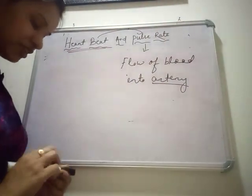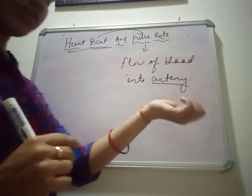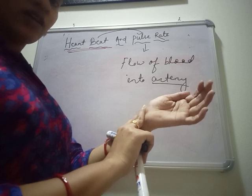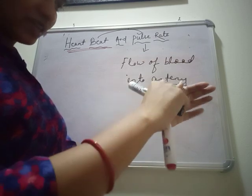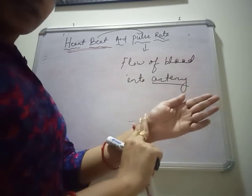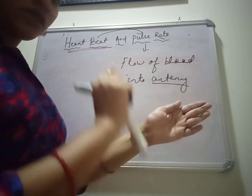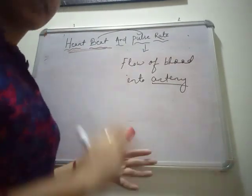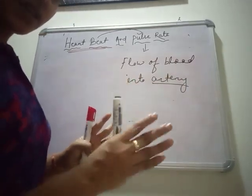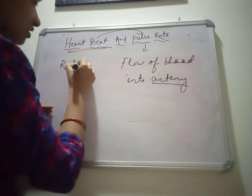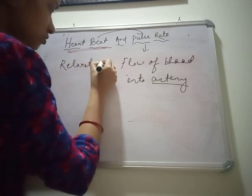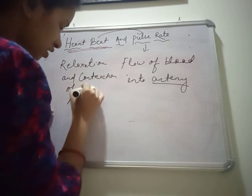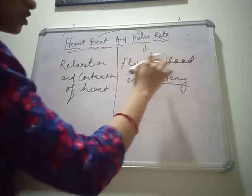You can feel your pulse rate on your left hand — turn it over and use two fingers, the index finger and middle finger. Press just below your thumb, and you can feel a throbbing — that is your pulse rate. Many people understand heartbeat and pulse rate as the same. The rate is the same, but the function is different. Heartbeat is the relaxation and contraction of the heart, and pulse rate is the flow of blood into the artery.